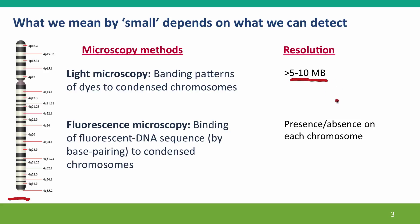The resolution was only 5 to 10 megabases — that's 5 to 10 million base pairs long. Subsequently, they developed techniques of fluorescent microscopy, where by tagging particular DNA fragments with fluorescent dyes that would glow under ultraviolet light in different colors, they were able to use base pairing to match these DNA probes to bind to the corresponding places on the chromosomes. This allowed researchers to detect the presence or absence of specific sequences on specific chromosomes.